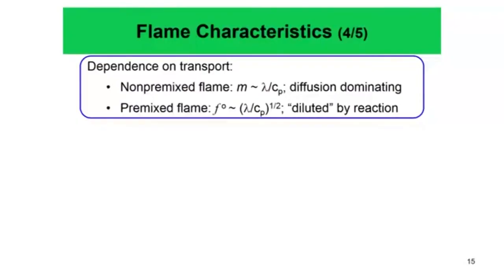Before that, contrasting non-premix flames and premix flames: the burning flux of a non-premix flame is proportional to λ/C_p, showing diffusion dominance. For a premix flame, F_0 = (λ/C_p)^(1/2) — it is diluted by reaction. F_0 is essentially (λ/C_p)^(1/2) times (reaction rate)^(1/2), which means the burning flux is a geometric mean of thermal diffusivity and reaction rate. Both diffusion and reaction are equally important for a premix flame, whereas for a diffusion or non-premix flame, it is controlled purely by diffusion.